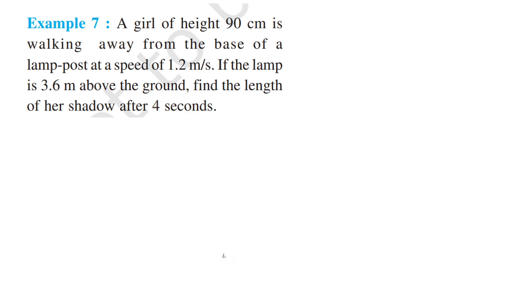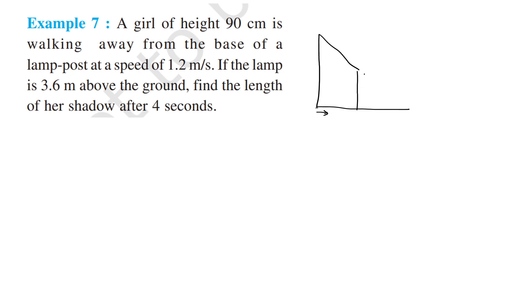Let me draw the diagram first. So let this be the lamp post, and the girl is walking away from the lamp post in this direction. The height of the lamp post is 3.6 meters and the girl's height is 0.9 meters. When solving a problem, all units should be in the same units.